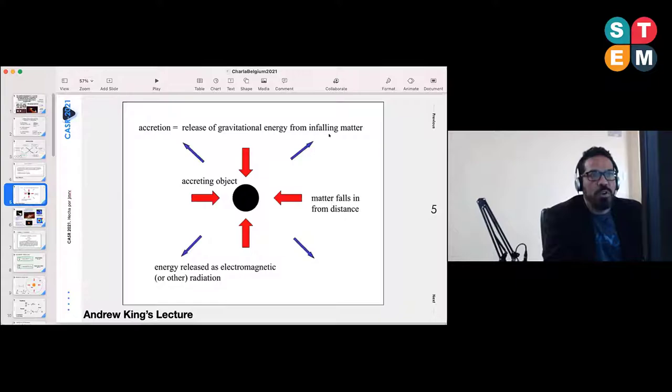In principle we have a compact object—can be a neutron star, can be a black hole—and infalling material. Usually the release of this gravitational energy comes in the form of energy release as electromagnetic radiation.